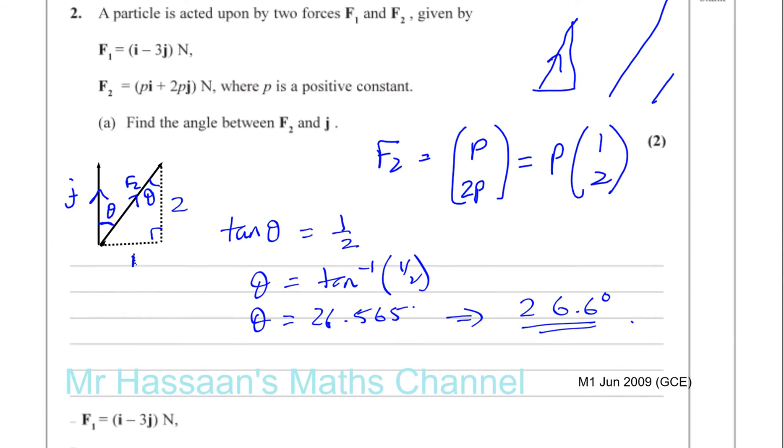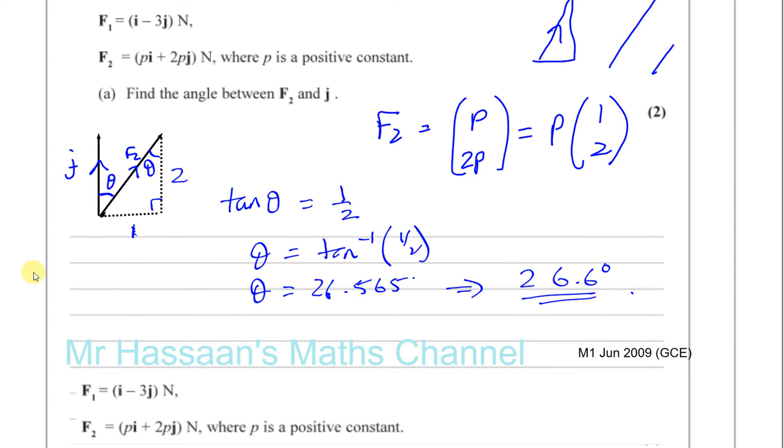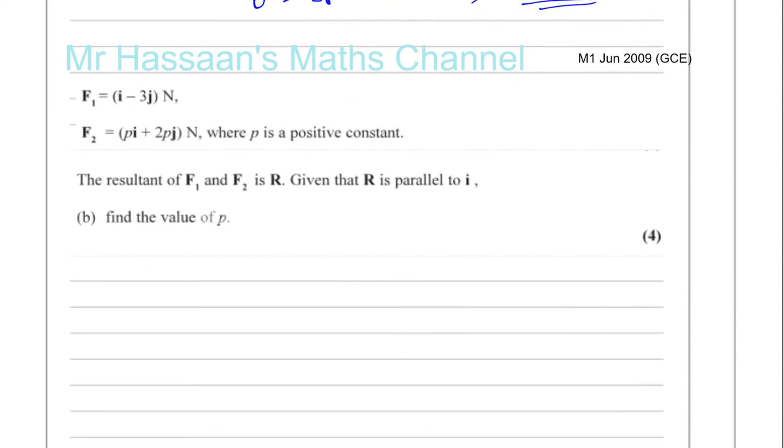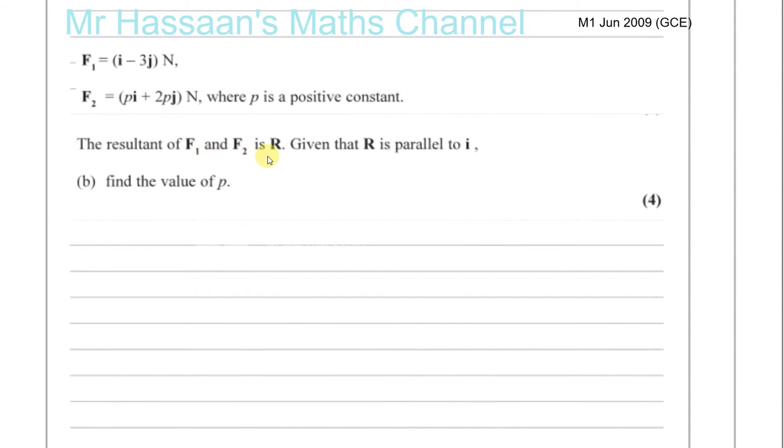Now, part B. We're told that the resultant of F1 and F2 is R. What does that mean? Well, that means in terms of vectors, F1 plus F2 will give us R.